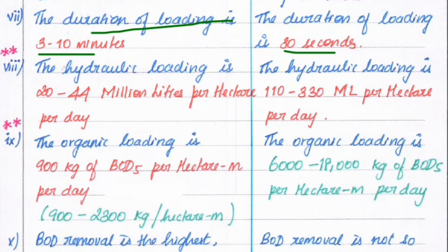The hydraulic loading in the slow rate trickling filter is 20 to 44 million liters per hectare per day, but the hydraulic loading in the fast rate trickling filter is 110 to 330 million liters per hectare per day.